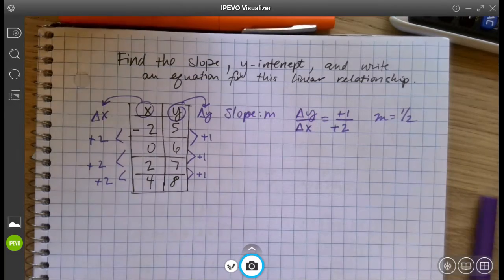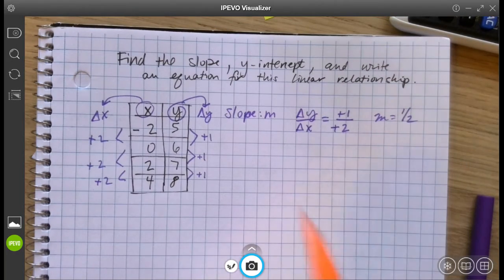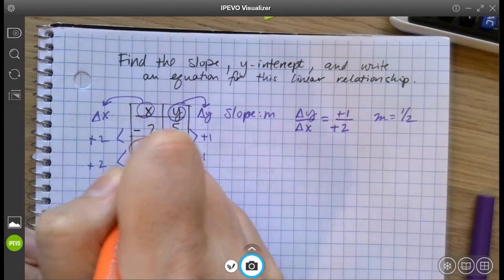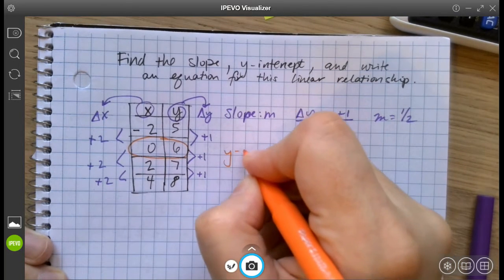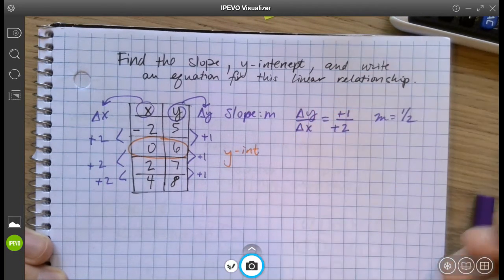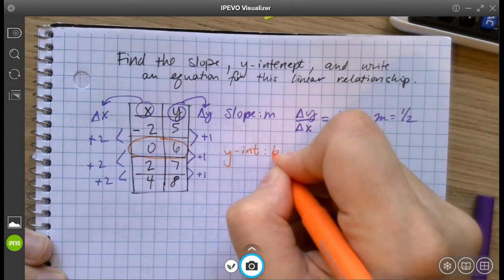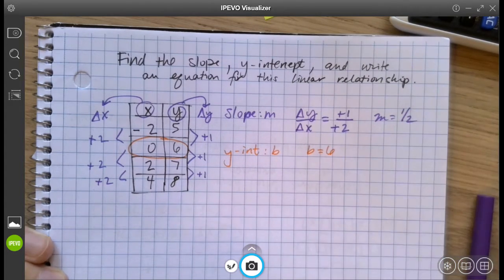Y-intercept for this relationship is pretty easy. You just look for where the x is 0 equals 6. So the y-intercept, y-int is for y-intercept. That's b. b equals 6.